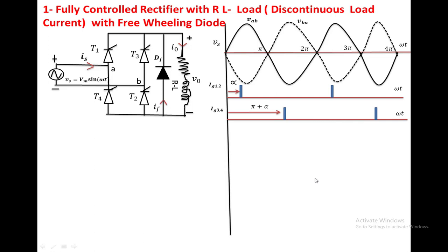We start developing the output voltage waveform from alpha. At alpha, T1 and T2 are turned on. Once T1 and T2 are on, the output voltage follows the input voltage of T1 and T2, that is the VAB voltage. After pi, T1 and T2 are forced to conduct because of the inductance.